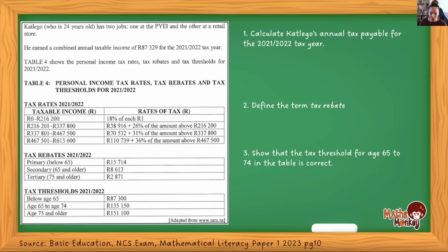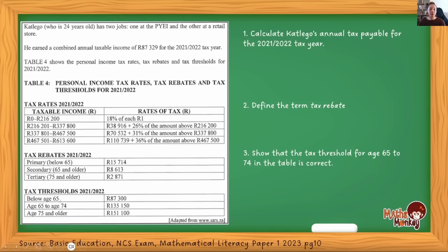Let's quickly understand these. Tax rates refers to how they calculate your tax — you use your taxable income to find the range in the tax table, then do the calculation on the right. Tax rebates are when you get money back based on your age. Tax threshold refers to the maximum amount of money you can earn to ensure you do not pay tax. So if a person is under 65 and earns less than R87,300, they do not need to pay tax.